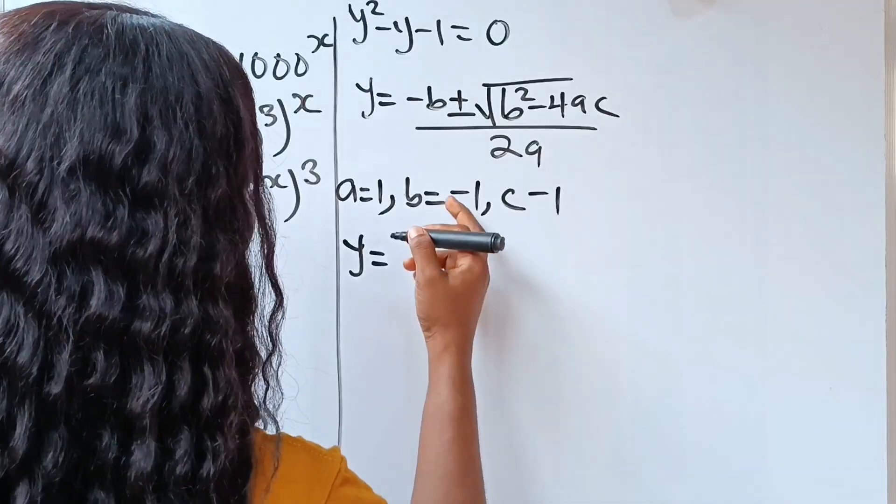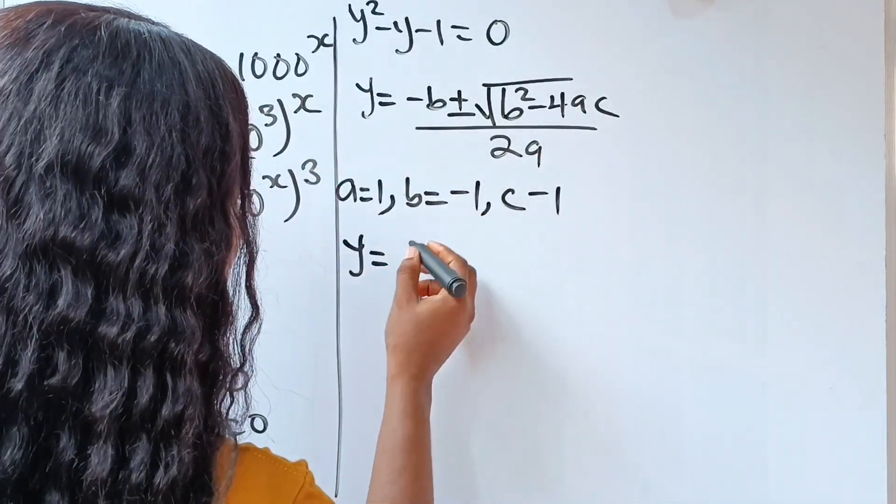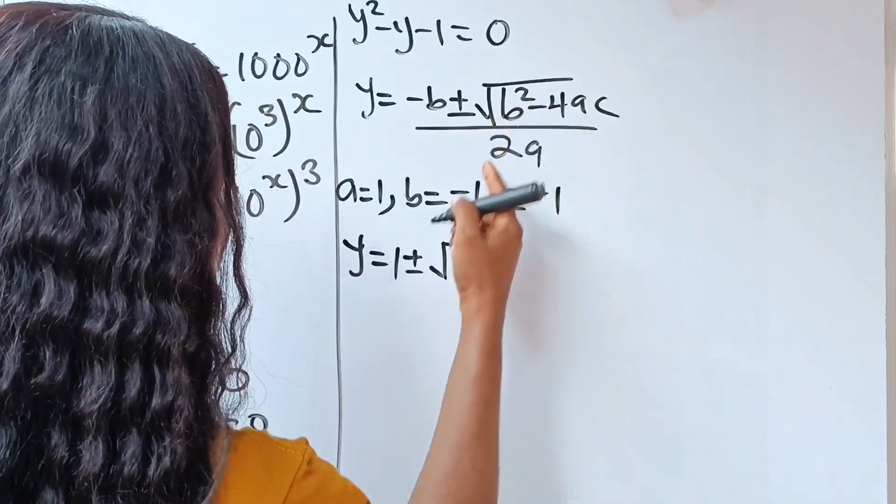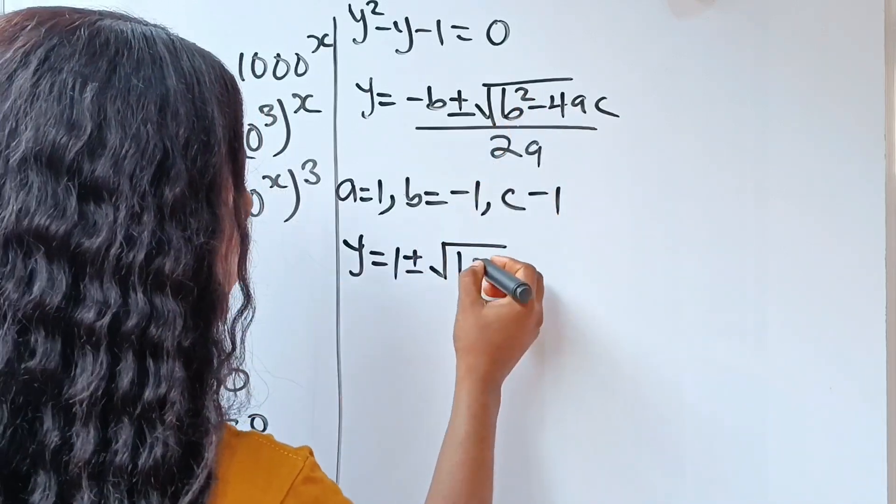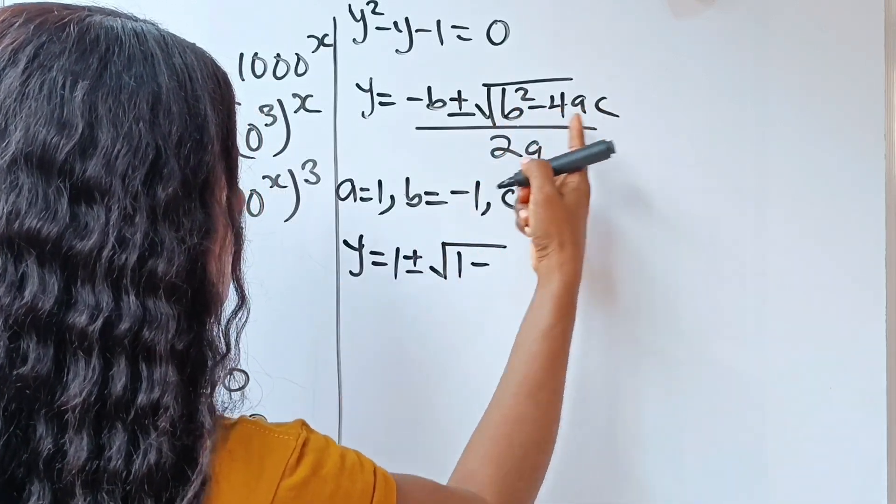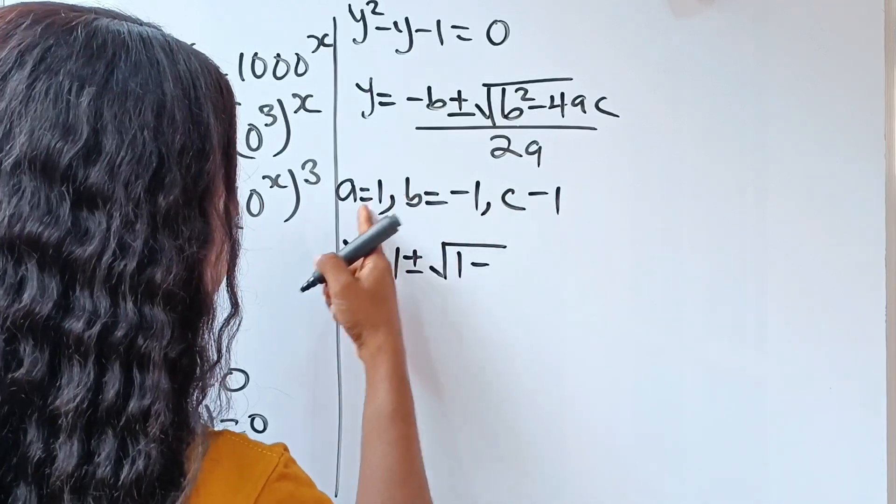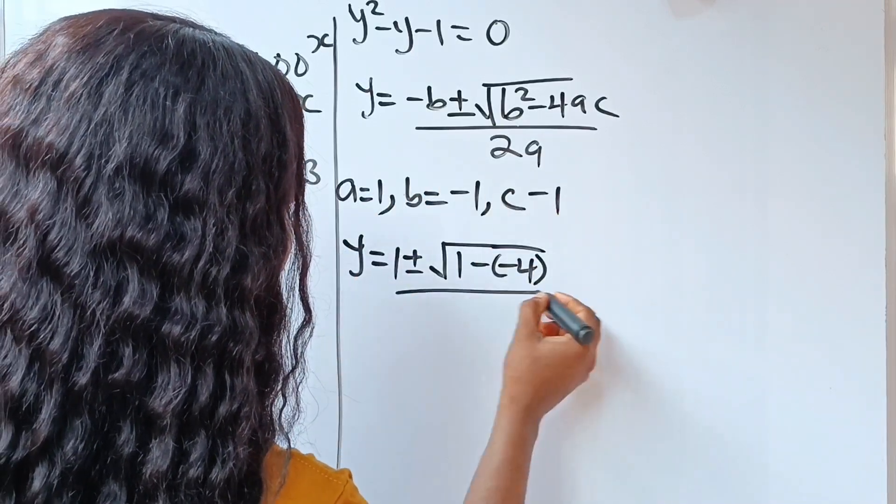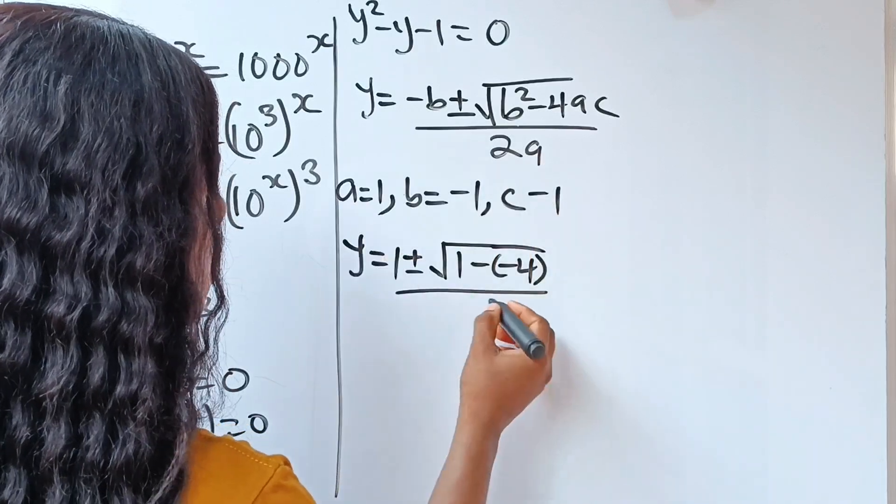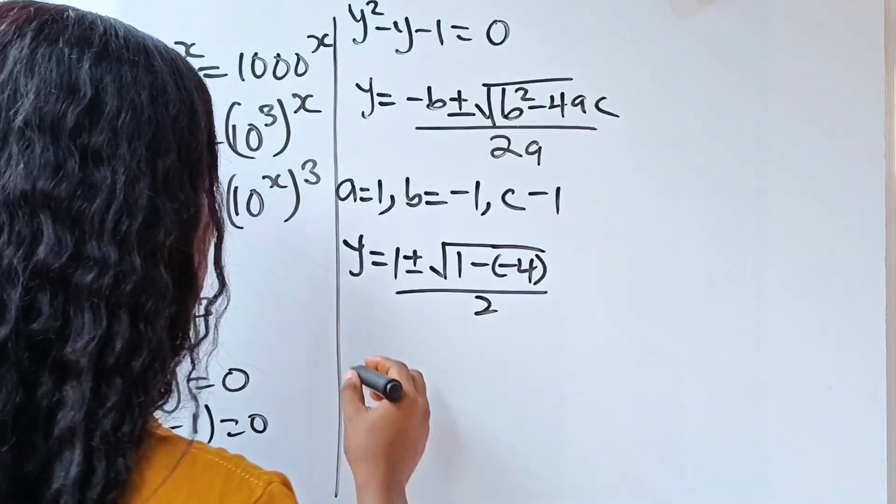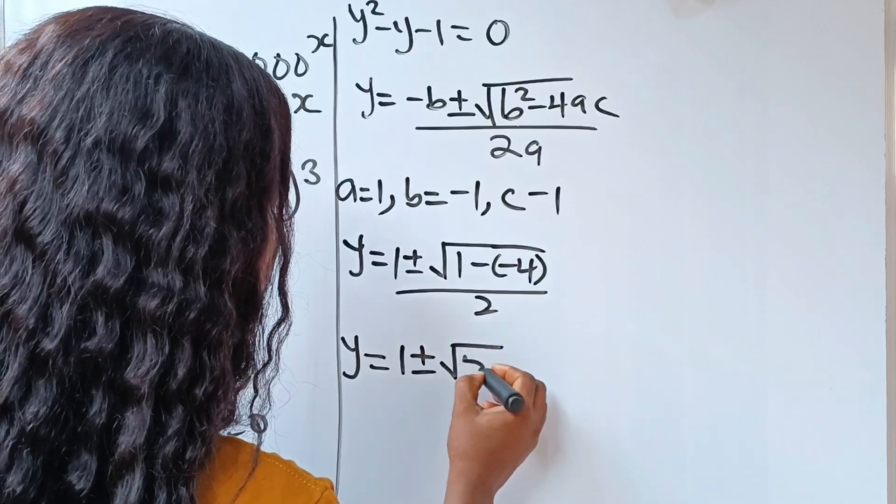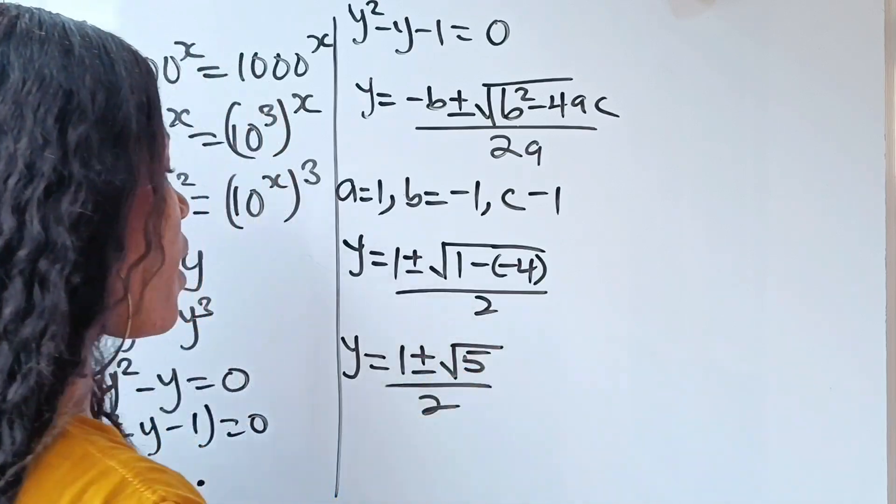So our y is equal to minus b, that is minus minus 1, which is 1, plus or minus square root of b squared, that is minus 1 squared, which is 1, minus 4ac. That is 4 times 1, which is minus 4. Divided by 2a, that is 2 times 1, which is 2. So we have that y is equal to 1 plus or minus square root of 5 divided by 2.